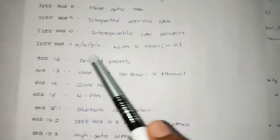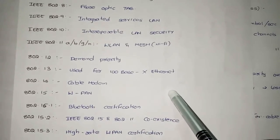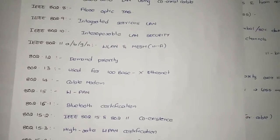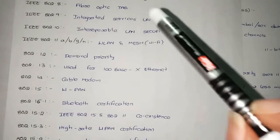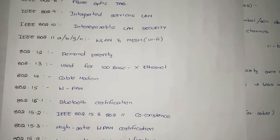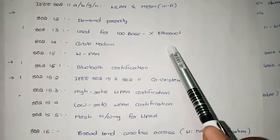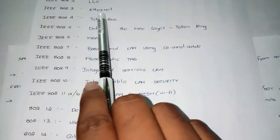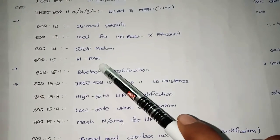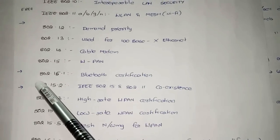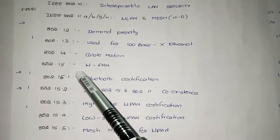A Wi-Fi network covers a lower range area, while a mesh Wi-Fi network covers a broader or longer distance. IEEE 802.12 deals with demand priority. IEEE 802.13 is used for 100Base-X Ethernet. Ethernet connects several devices through coaxial cables to a single hub, through which data is transmitted — that is Ethernet. IEEE 802.14 is used for cable modems. IEEE 802.15 is used for wireless PAN.